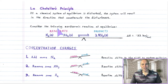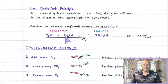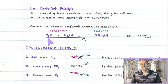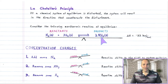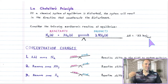For an example, let's consider the following exothermic reaction which is at equilibrium. The reaction we've seen before in the previous lecture — nitrogen reacts with hydrogen to produce ammonia. This is an exothermic reaction. It releases 22 kilocalories per mole, so heat is produced. We'll deal with heat in a little bit.